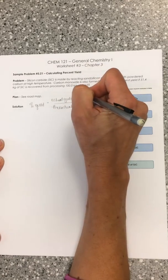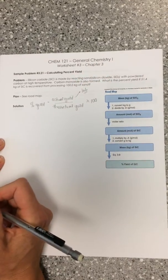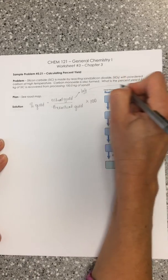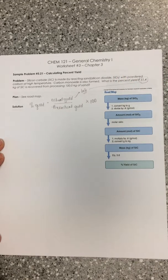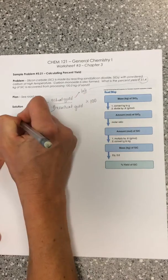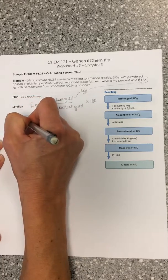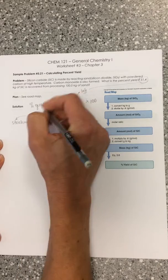So the actual yield is something that you're going to get in the lab. That's a quantity that's measured. And they actually give us that value. They tell us that we make 51.4 kilograms of our silicon carbide. So now the theoretical yield is really a stoichiometry calculation.